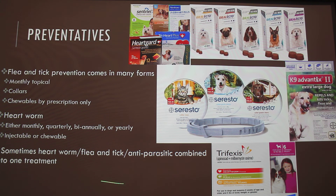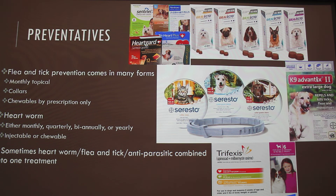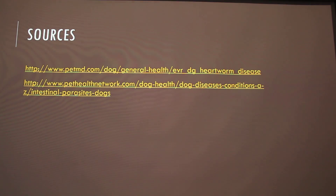Prevention is definitely better than trying to deal with fleas, ticks, or parasites. They can be very difficult and very expensive to get rid of once you have them, so it's definitely easier to just prevent them. Does anyone have any experience they want to talk about, like a dog with heartworms?